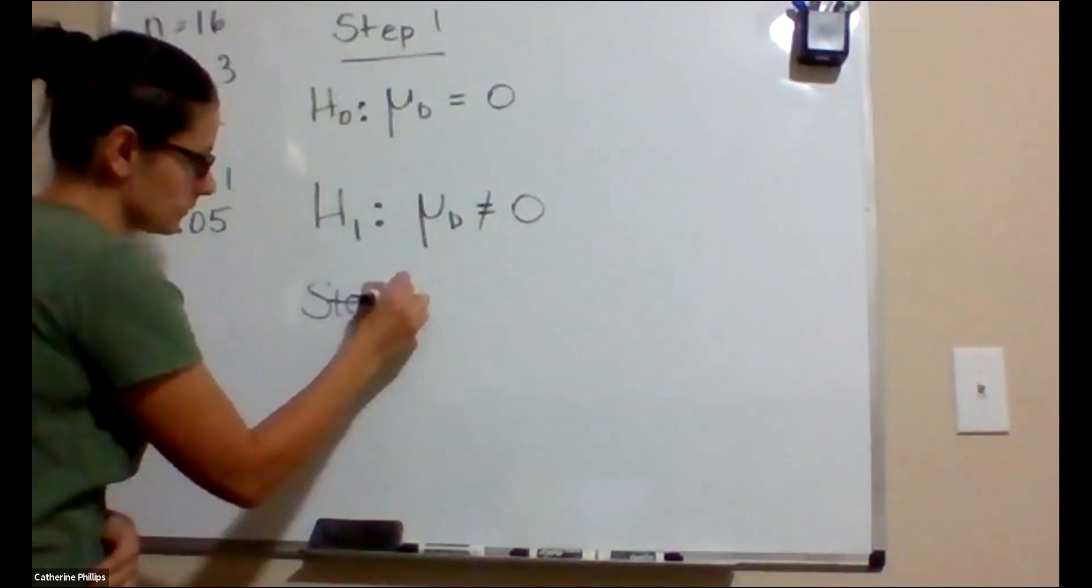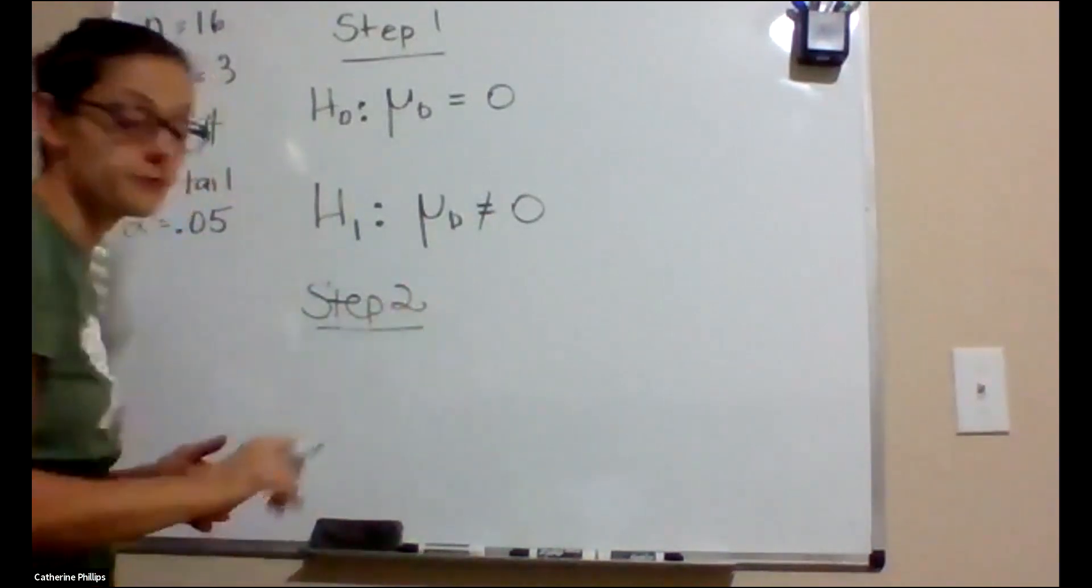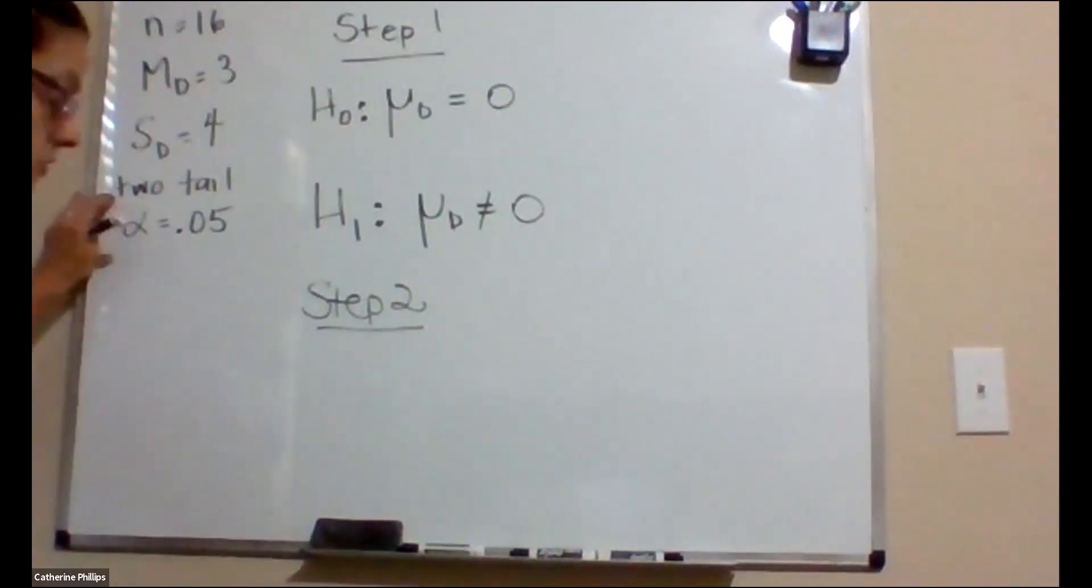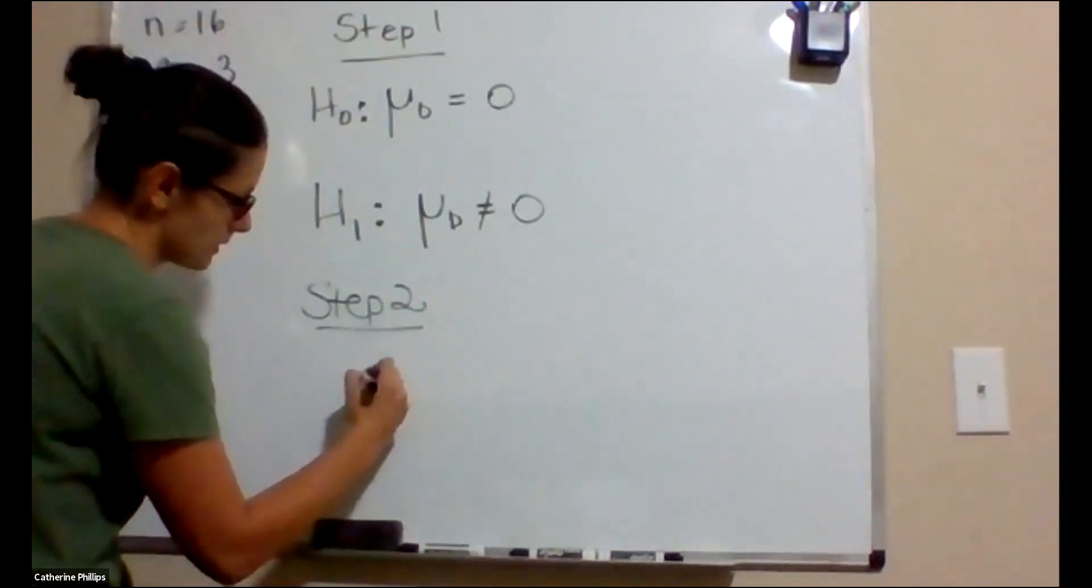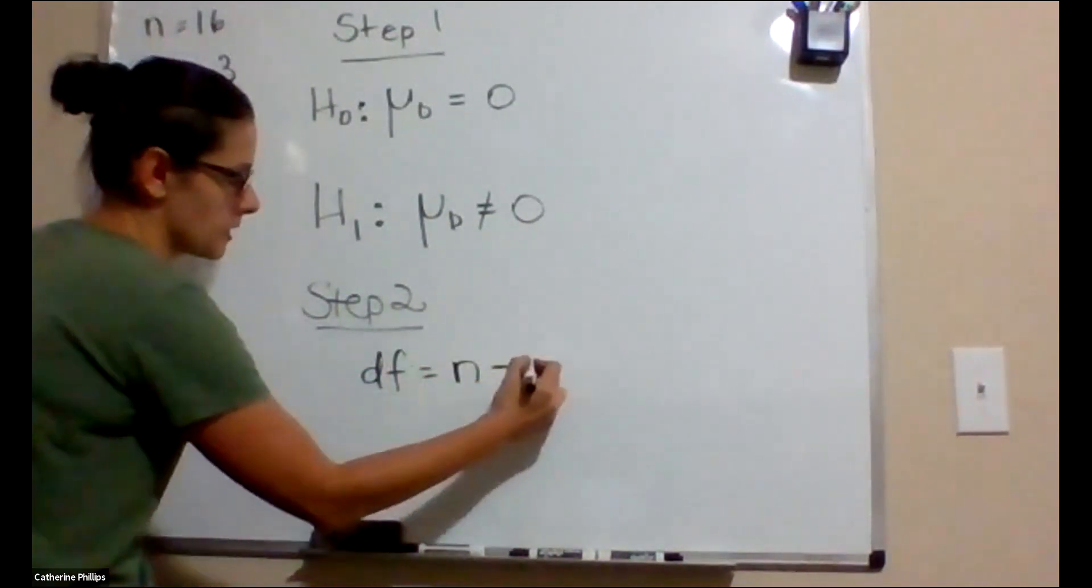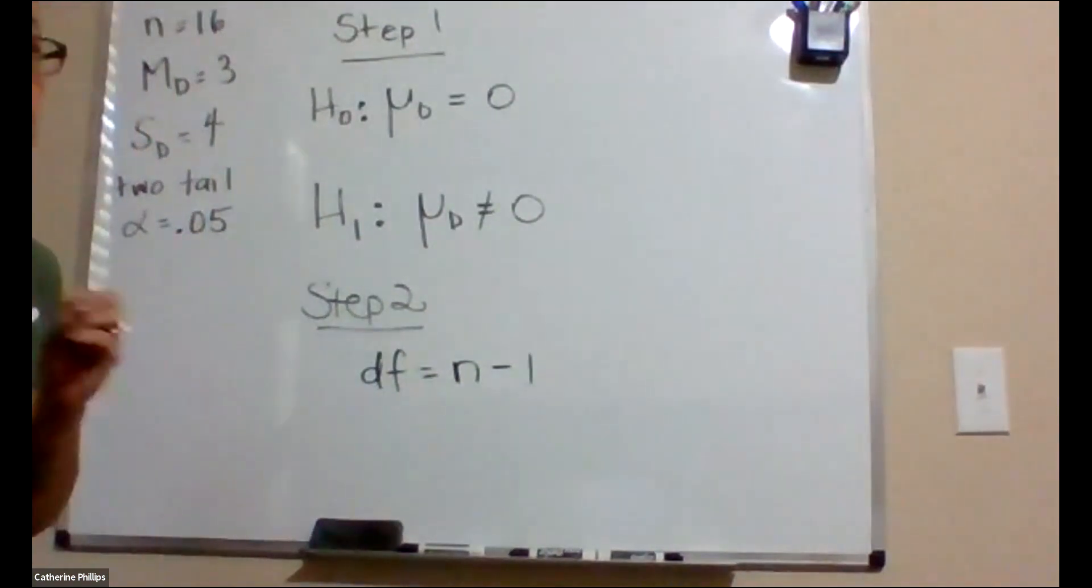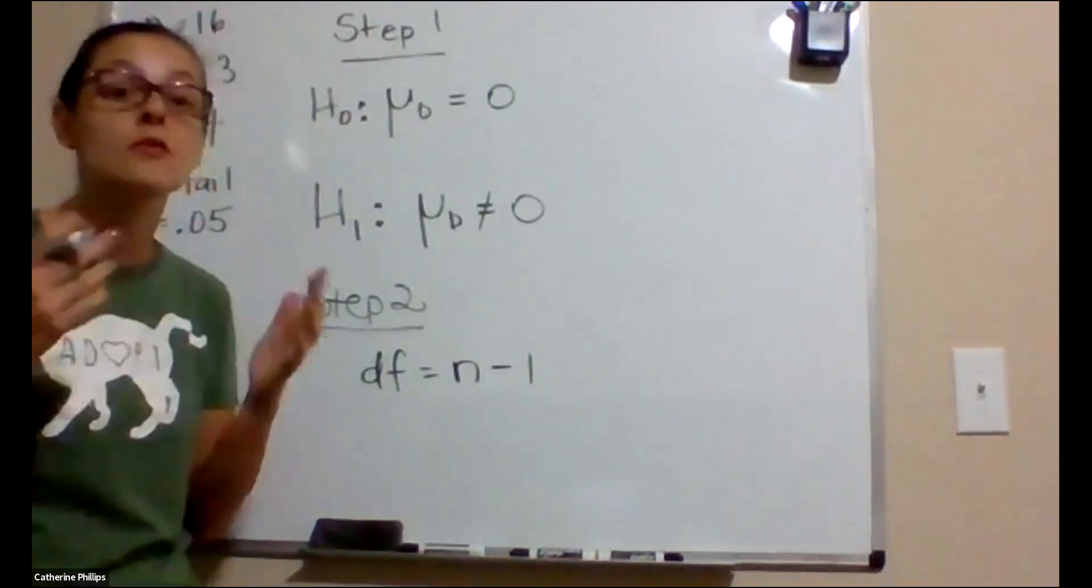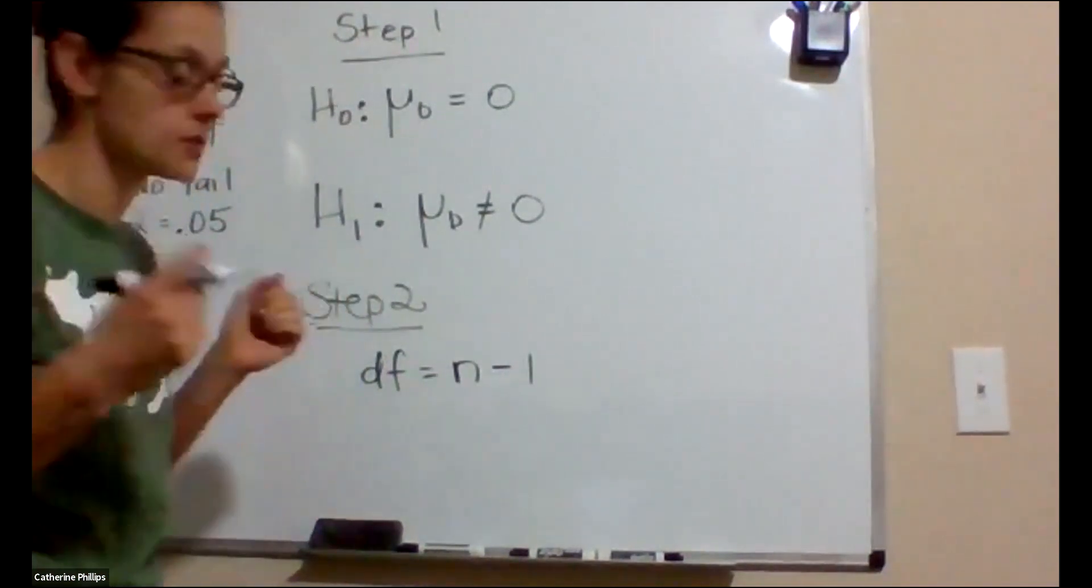Step two. We need to find our critical values. In terms of the critical values, we need that it's a two-tailed test. We need an alpha, it's 0.05. And we need our degrees of freedom. Here, our degrees of freedom is n minus one, where n is the number of participants, the number of paired scores, the number of difference scores.